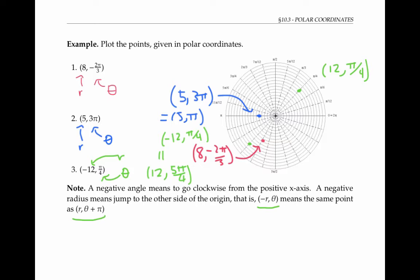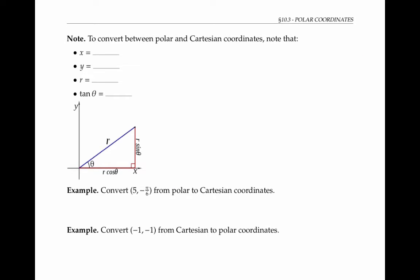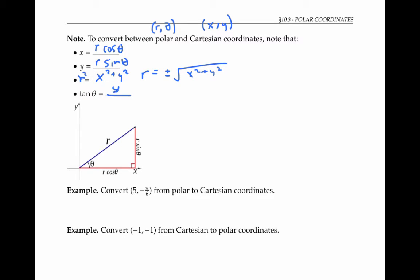Adding pi just makes us jump around to the opposite side of the circle. To convert between polar and Cartesian coordinates, it's handy to use the following equations. First, x is equal to r cosine theta, y is equal to r sine theta, r squared is equal to x squared plus y squared, which means that r is plus or minus the square root of x squared plus y squared.